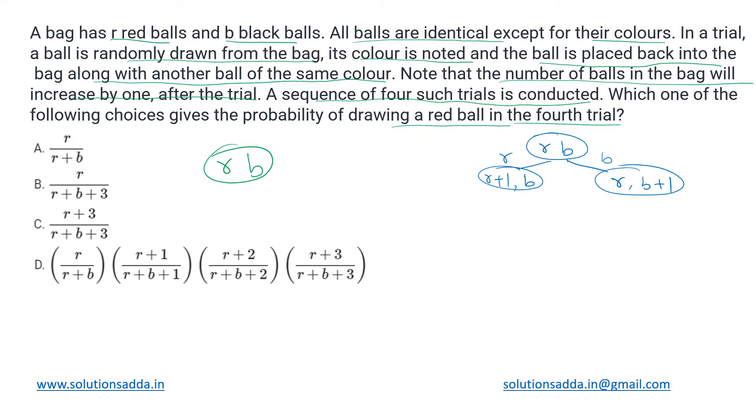Going to the second trial, both of these will branch out into two, so we also have two outcomes here. If we are drawing r, it would be r plus two and b. Here it will be r plus one, b plus one. Similarly, if we are drawing r and b, then r plus one, b plus one, and r, b plus two.